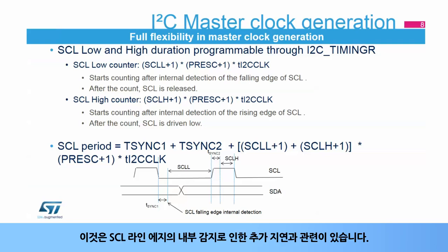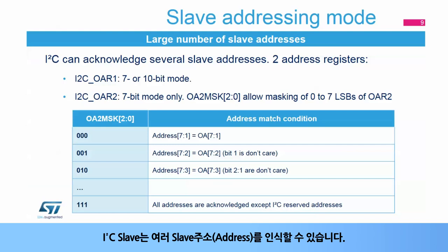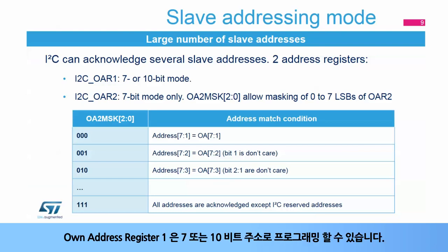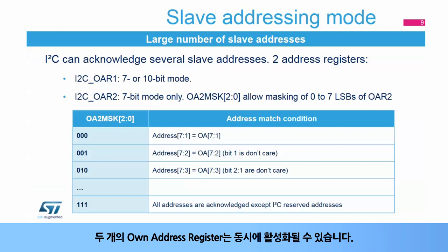This is linked to the added delays due to the internal detection of the SCL line edge. These delays, T-SYNC-1 and T-SYNC-2, depend on the SCL falling or rising edge, the input delay due to the filters, and the delay due to the internal SCL synchronization with the I2C clock. The I2C slave can acknowledge several slave addresses. The slave addresses are programmed into two registers. Own Address Register 1 can be programmed with a 7- or 10-bit address. Own Address Register 2 can be programmed with a 7-bit address, but the least significant bits can be masked through the OA2 MSK register to acknowledge multiple slave addresses. The two own address registers can be enabled simultaneously.